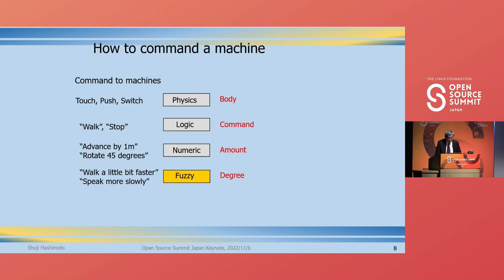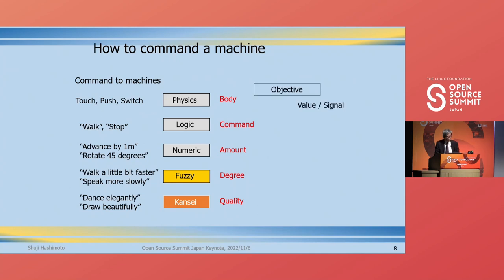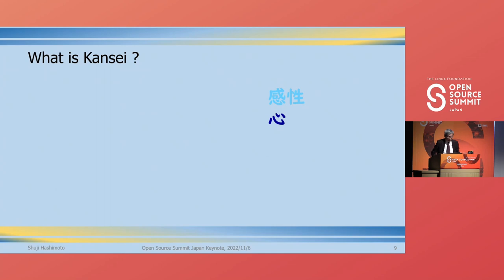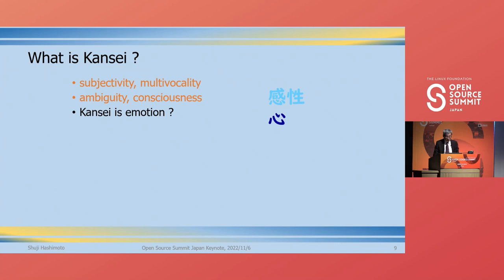Recently, researchers have explored more sophisticated methods of interaction — the most human indication schemes that cannot be easily parameterized. For example: 'apply it neatly,' 'hold it gently,' 'make a beautiful shape.' I call this the Kansei command. Kansei is a Japanese word expressing subjective concepts like sensibility, sensuality, intuition, mood, or emotion. It is also used as sense or feeling.